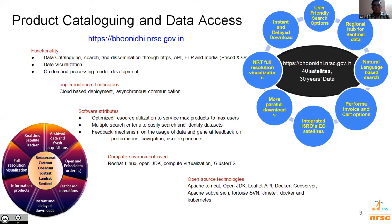The platform would support users with different skill sets from novice to advanced. For novice users, it will provide pre-built models which can be readily executed over the datasets, and for advanced users it will provide a platform to develop, test, and execute their own algorithms. This platform would enable collaborative and open development of data products and services and promote the idea that processing should move closer to the data. The software implementation of Bhoonidi involves open source components like Kubernetes, Docker containers, Leaflet APIs, GeoServer, Apache Subversion, and Apache Airflow for workflows.